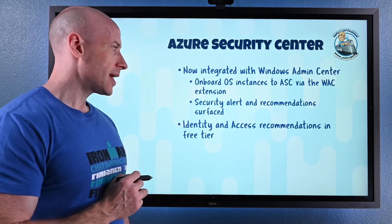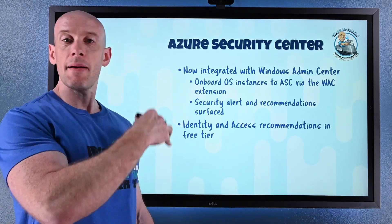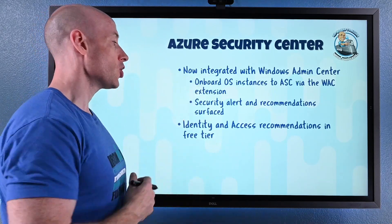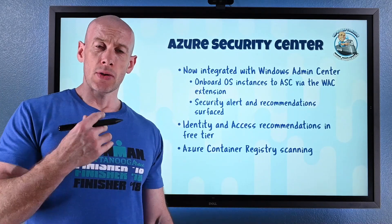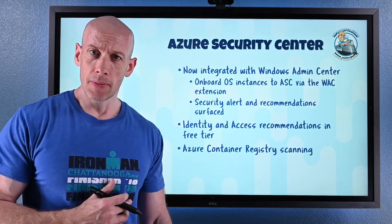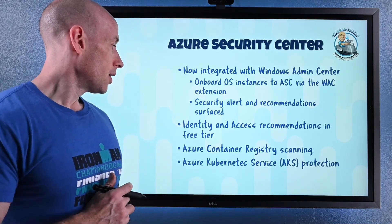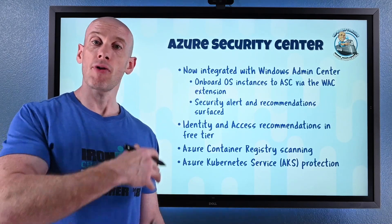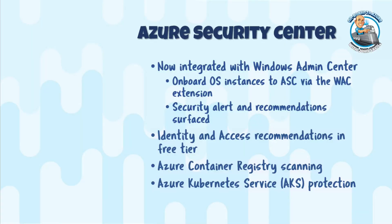Identity and access recommendations are now available in the free tier of Azure Security Center — things like MFA should be enabled on these accounts, or you shouldn't have more than three owners. Azure Container Registry will now be scanned, checking images you upload for any vulnerabilities. Likewise, Azure Kubernetes Service (AKS) now has protection — threat detection, checks on instances added to your subscription, and security recommendations.